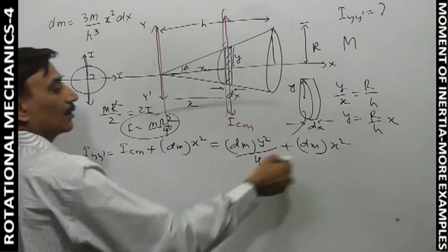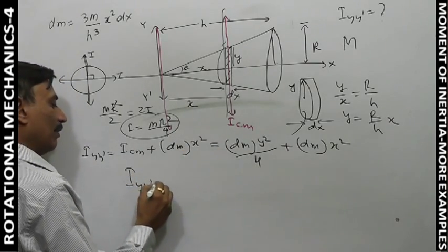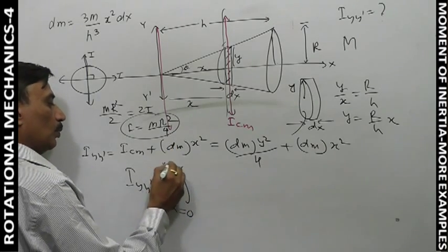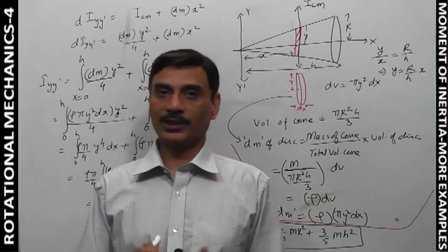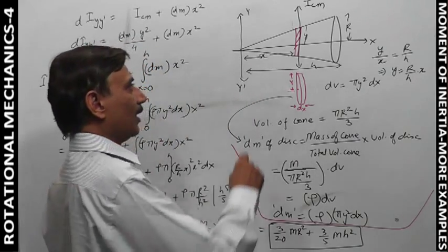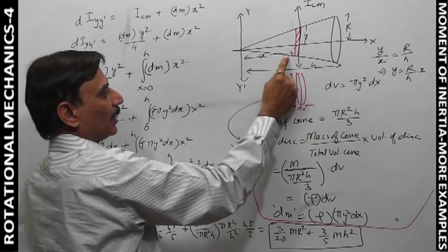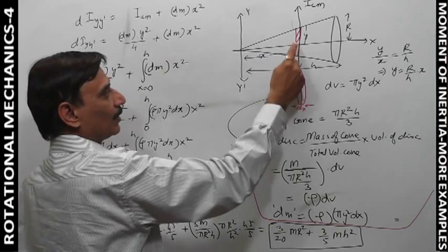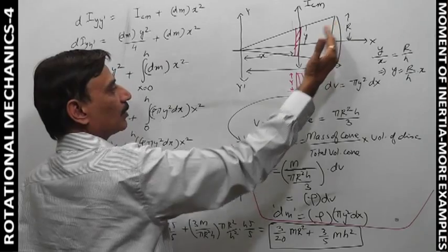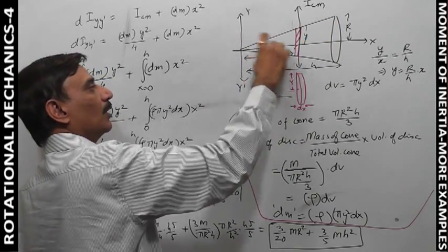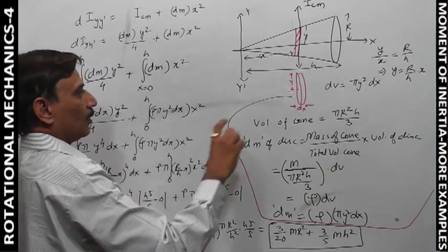So di = dm·y²/4 + dm·x². Integrate Iyy' with x going from 0 to h for each disc element. The total volume is πr²h/3. Our approach for the right circular cone: we take a small red-colored disc at distance x with thickness dx, find its moment of inertia about this axis, then integrate from 0 to h to get the total moment of inertia.